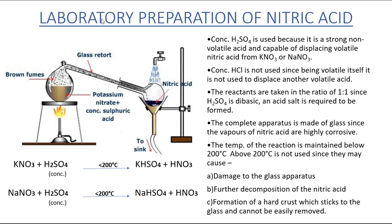First we will study the laboratory preparation of nitric acid. In the retort, potassium nitrate or sodium nitrate is taken and concentrated sulfuric acid is added to it. When heated below 200 degrees Celsius, the reaction takes place producing potassium hydrogen sulfate and nitric acid if potassium nitrate is used, or sodium hydrogen sulfate and nitric acid if sodium nitrate is used.